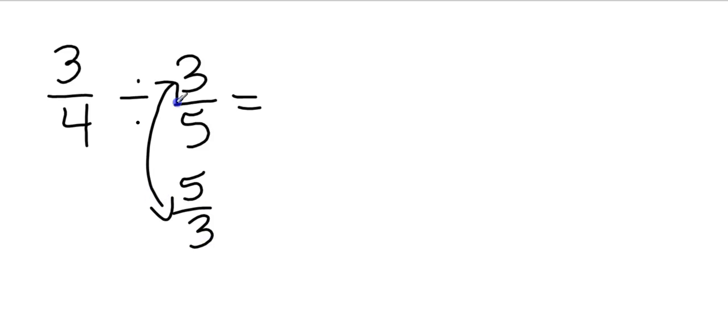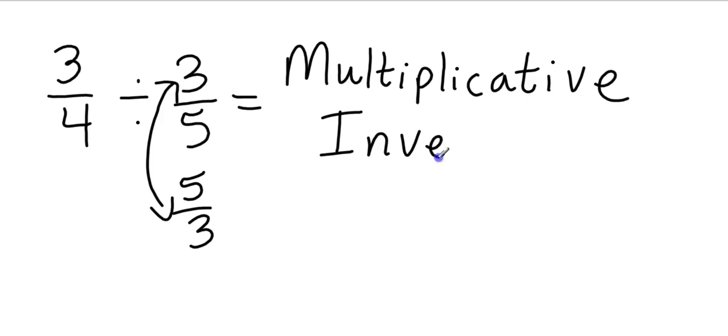Okay, so when I take any fraction... When I flip this 3 fifths into 5 thirds, that transformation is called the multiplicative inverse, which just means I take the reciprocal. So the multiplicative inverse of 3 fifths is 5 thirds. The multiplicative inverse of, let's say,